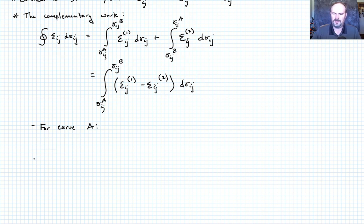So we have two conditions here. So we'll say what does it look like for curve A? And then we'll also ask the question how about for curve C? And what we want to try to evaluate is what is for curve A, what's epsilon_ij^(1) minus epsilon_ij^(2)? And then the same thing here.